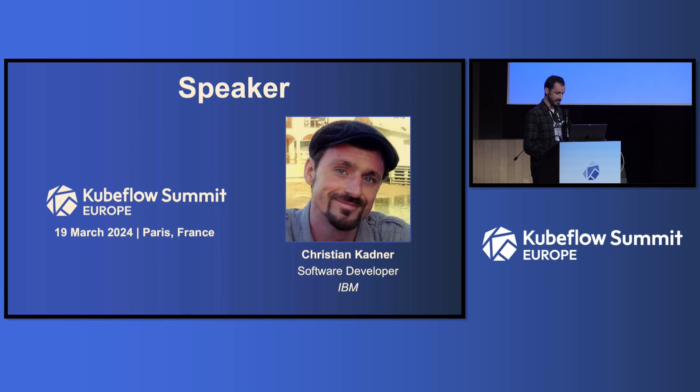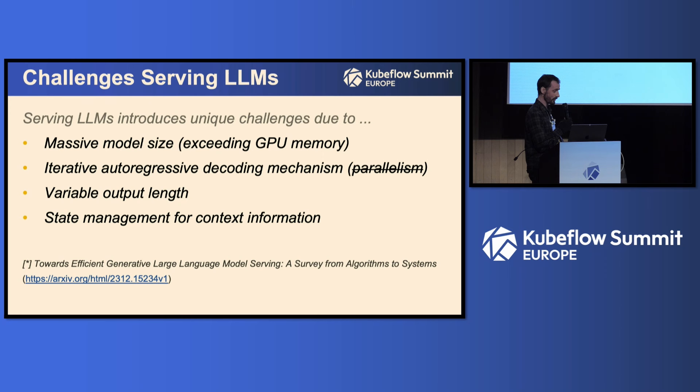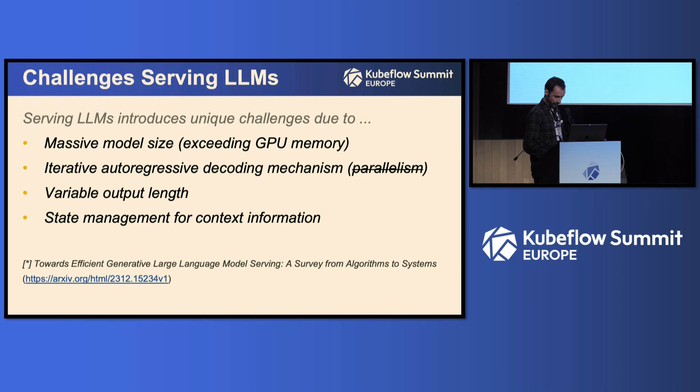Let's start with some of the challenges that come with serving large language models that are quite unique compared to the previous generation of models we were serving with KServe, for example. Large language models, as the name implies, are huge. They usually require GPUs, and oftentimes these models are so big that they can't fit on a single GPU, specifically exceeding the GPU memory. The iterative autoregressive decoding mechanism really doesn't work well with parallelization, which is the main benefit of using GPUs. And then of course you have variable length input and you have to manage the whole state of the context.